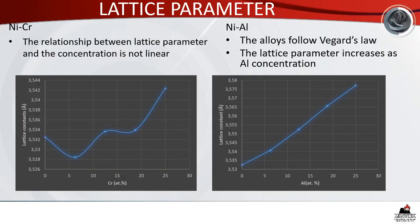For the results, we start with the lattice parameters of both nickel-chrome and nickel-aluminium alloys. For nickel-chrome alloys, the relationship between lattice parameter and chromium concentration is not linear — there is a decrease between 0 and 6.25 atomic percent chromium, followed by an increase between 6.25 and 25 atomic percent chromium. For nickel-aluminium, the alloy follows Vegard's law and the lattice parameter increases as aluminium concentration increases.